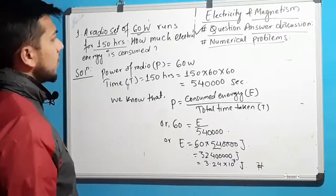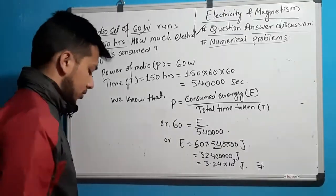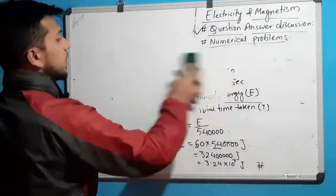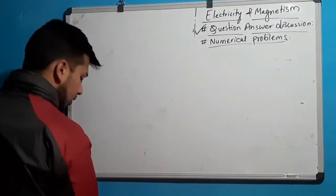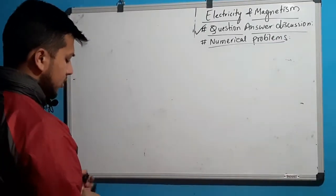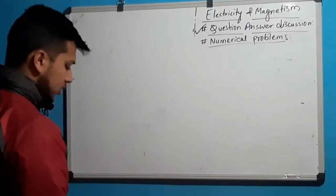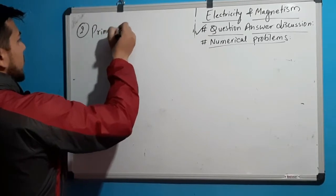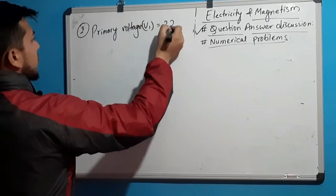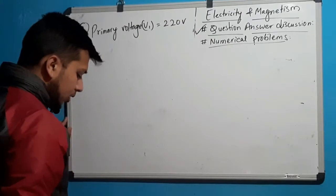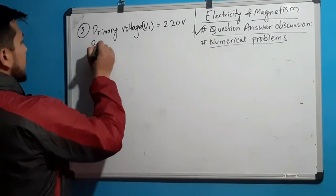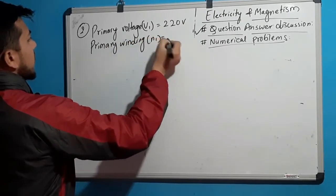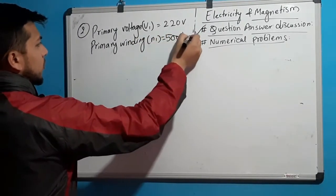On the next question, we are going to discuss a numerical related to transformer. Our transformer has a primary voltage V1 equal to 220V, and primary winding N1 equal to 500 turns.